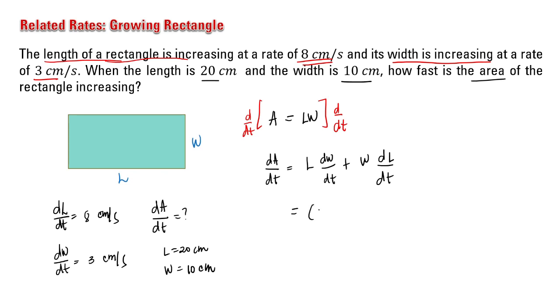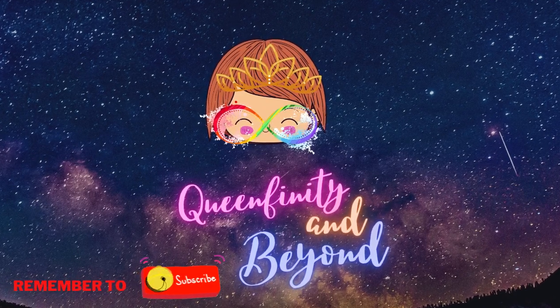By substitution, we can have 20 times 3 plus 10 times 8. So we have 60 plus 80, giving us 140. Since this is the derivative of the area with respect to time, our unit would be square centimeters per second.